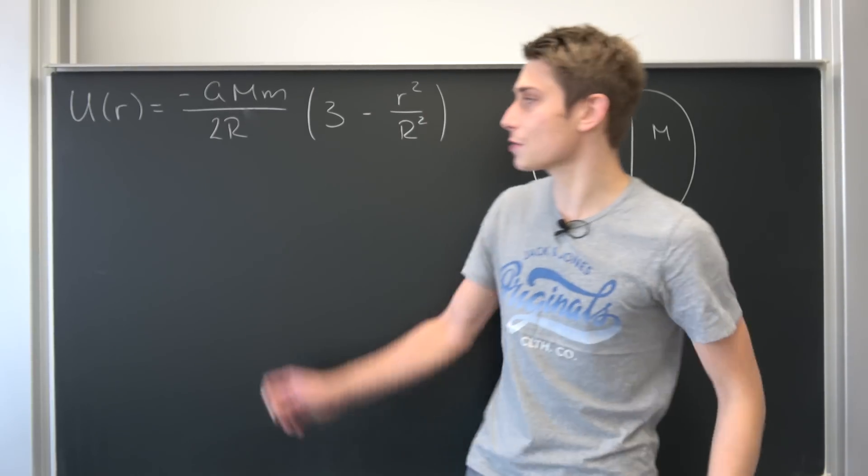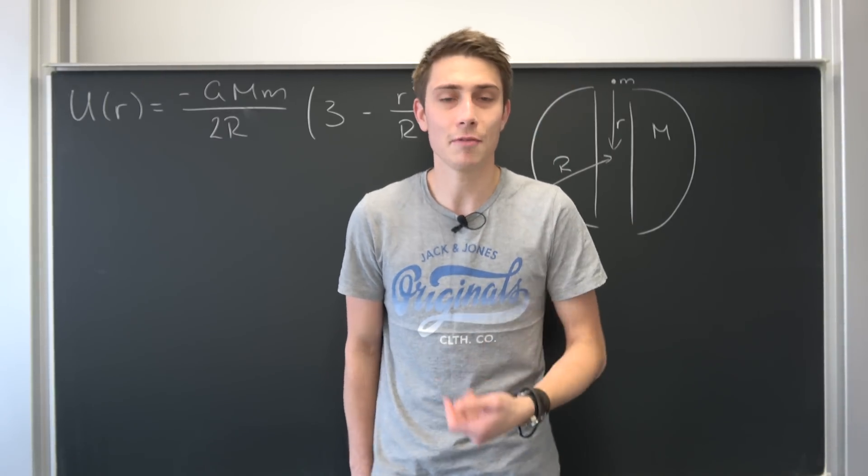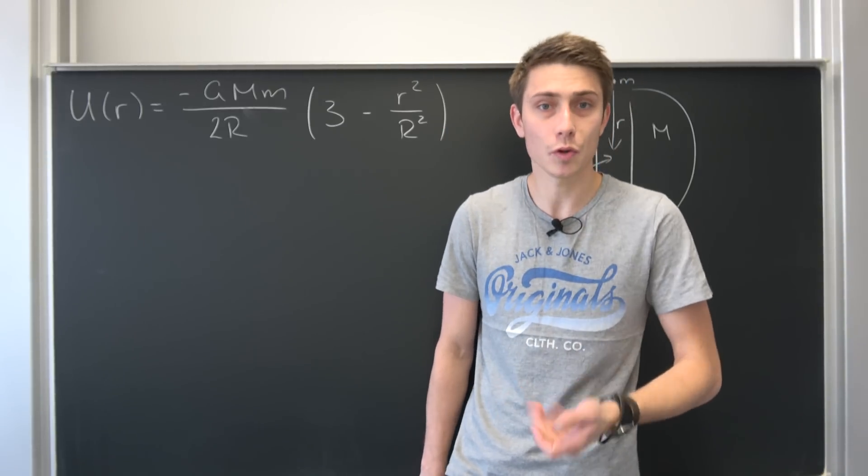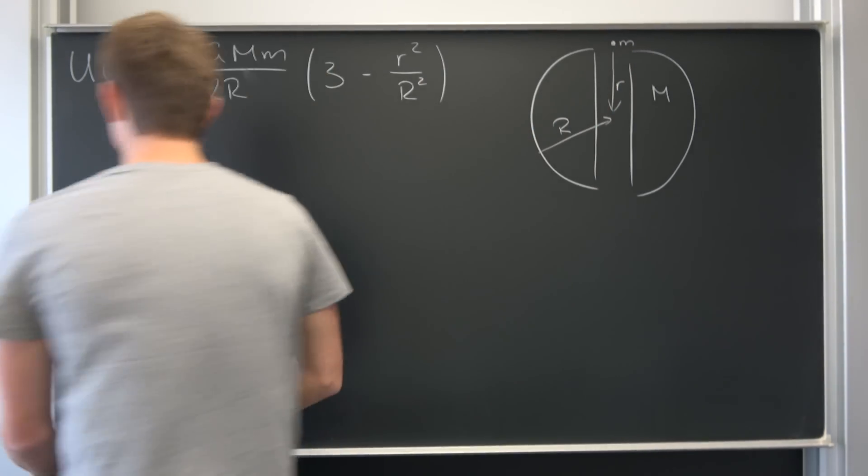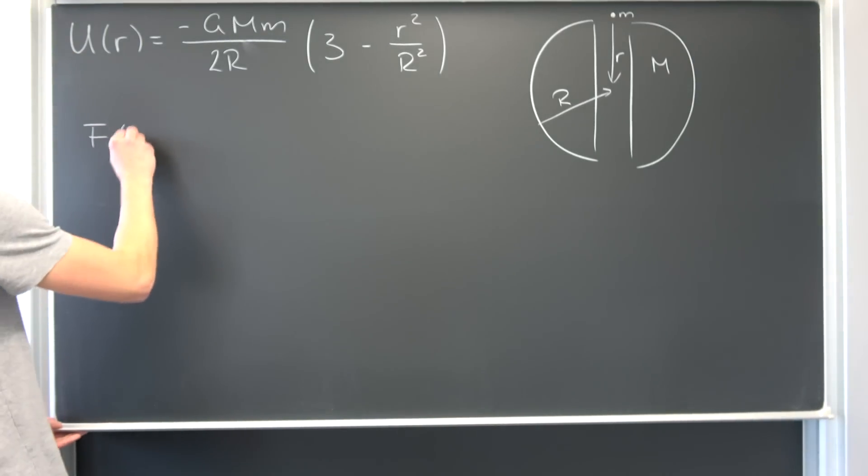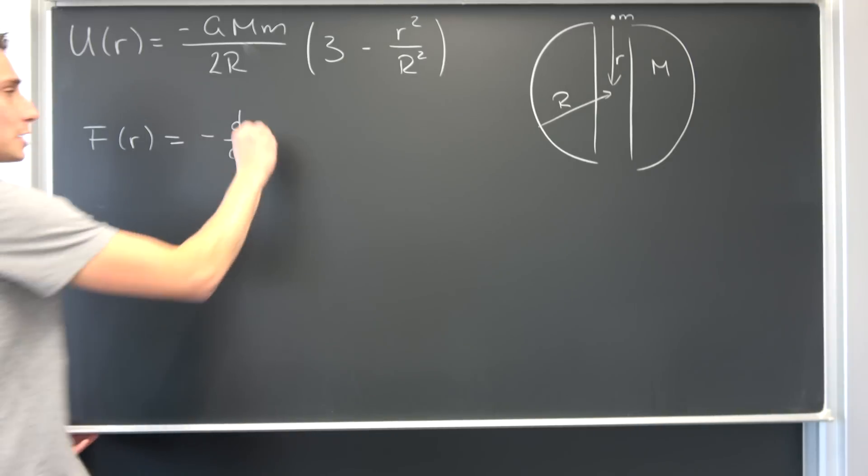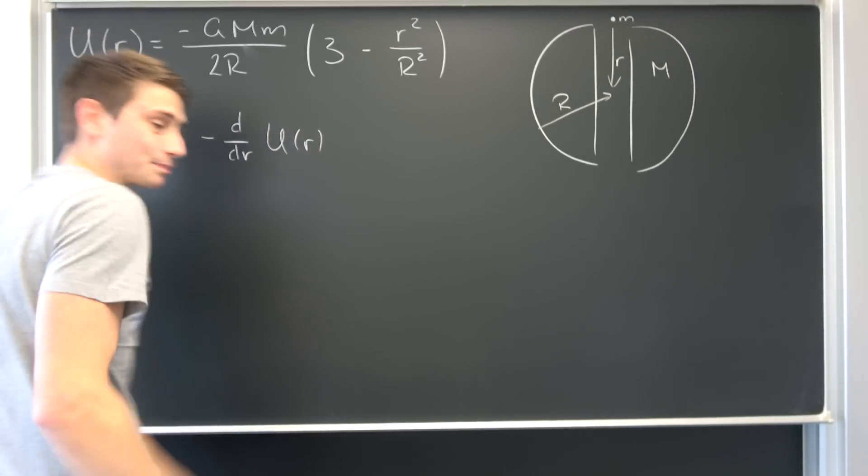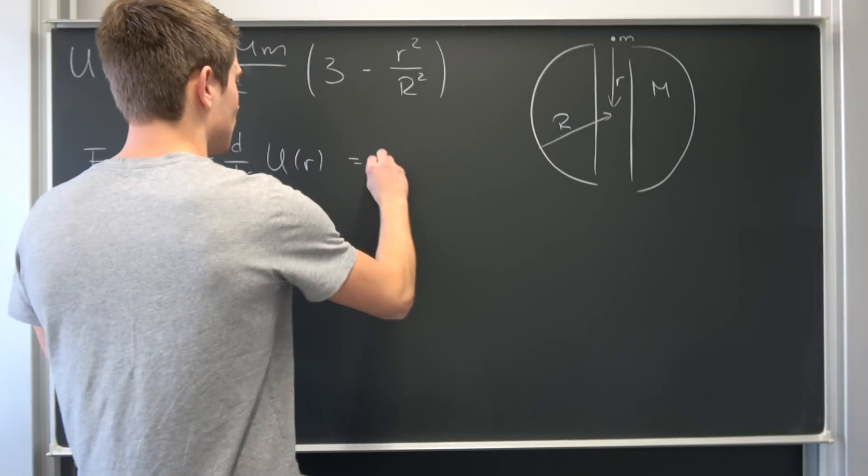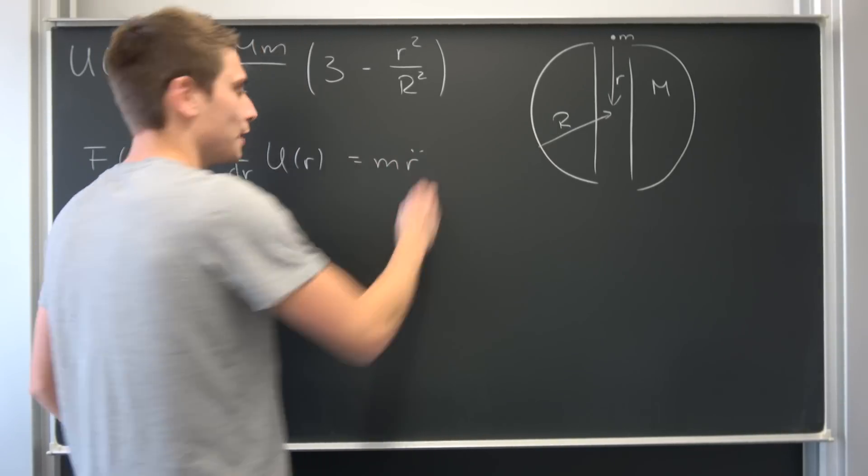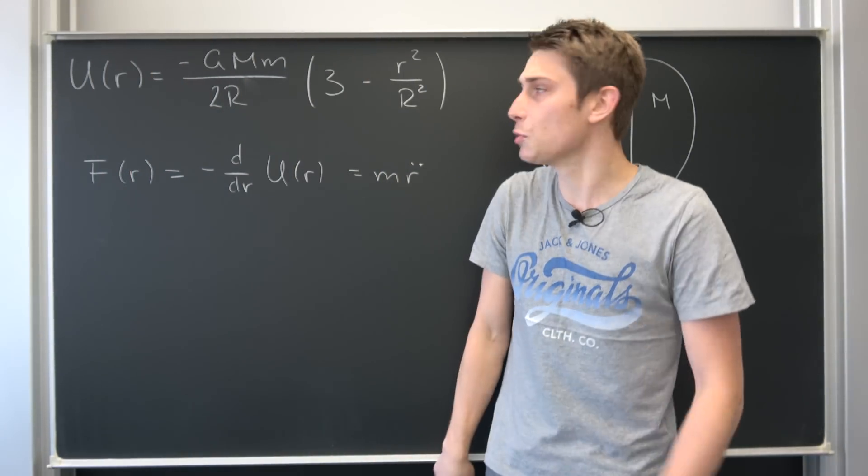And I shit you not, this thing right here is a conservative potential. So why not use something we have derived before, a little rule for conservative forces and thus conservative potentials, namely that we can derive a force with respect to R, namely by taking the derivative of our potential with respect to R. And then we already have a force, because a force is nothing but M times R double dot, mass times acceleration. And why not differentiate this right here and see what we get.